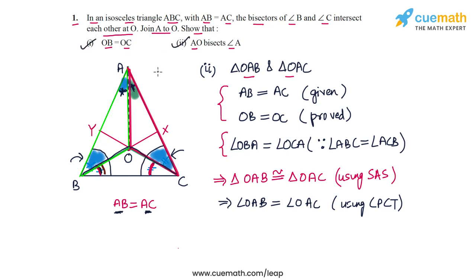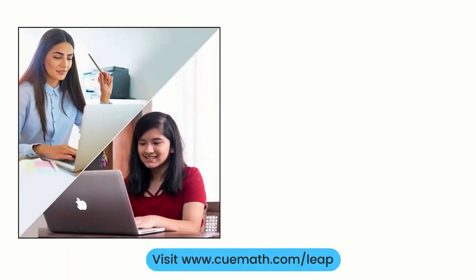We have proven both parts: OB is equal to OC, and AO bisects angle A. With this, question one is done.